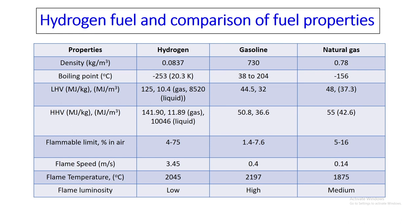For gasoline, the boiling point is 38 to 204 degrees Celsius and natural gas is minus 156 degrees Celsius. If we compare lower calorific value in MJ per kg, it is about 125 for hydrogen, whereas in gasoline it is 44.5 and natural gas is 48 — almost three times more value is with hydrogen. We can also extend our discussion with higher calorific value.